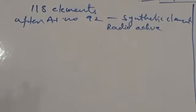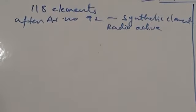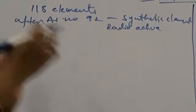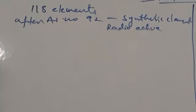To know the property of each and every element individually is quite impossible. That's why elements which show similar properties are grouped together and divided into different classes. Many types of classifications have been made by scientists.